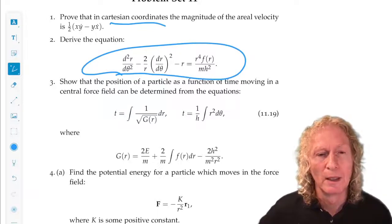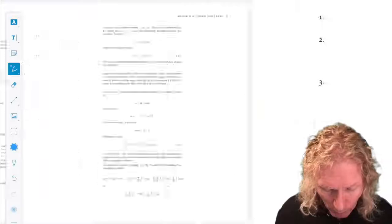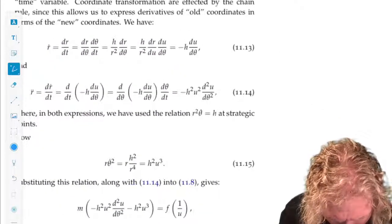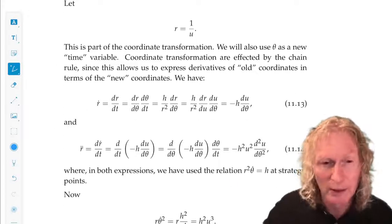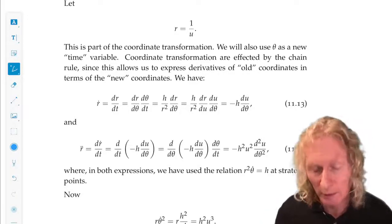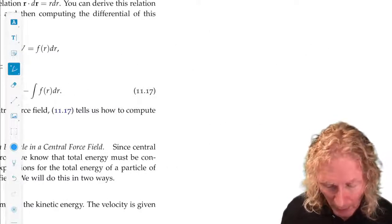And you can follow a little bit the model that was used in deriving this equation where we used r equal 1 over u. That was changing the dependent variable r, and now you're going to change the independent variable t to theta. So there's some hints in that problem.